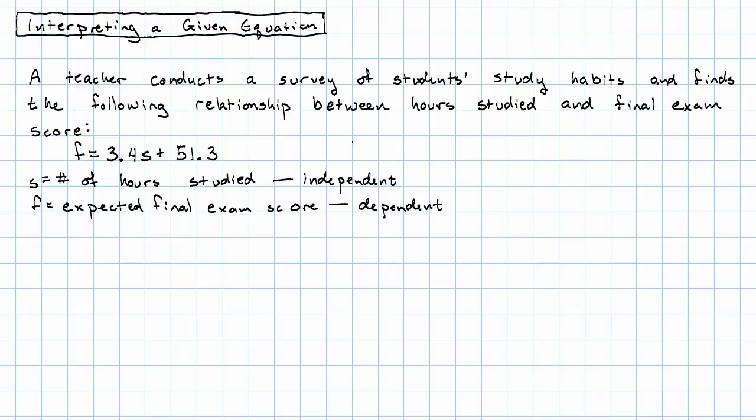Notice this is in slope-intercept form. It's in the form dependent variable equals m times independent plus b. So m is 3.4 and b is 51.3.